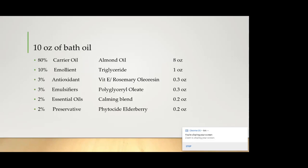For the emollient I chose triglyceride at 10%. For the antioxidant I chose a mixture of vitamin E and rosemary oleoresin. For the emulsifiers I chose polyglyceryl oleate, right? That was one of the options they gave and I've seen similar emulsifiers in other bath oils.